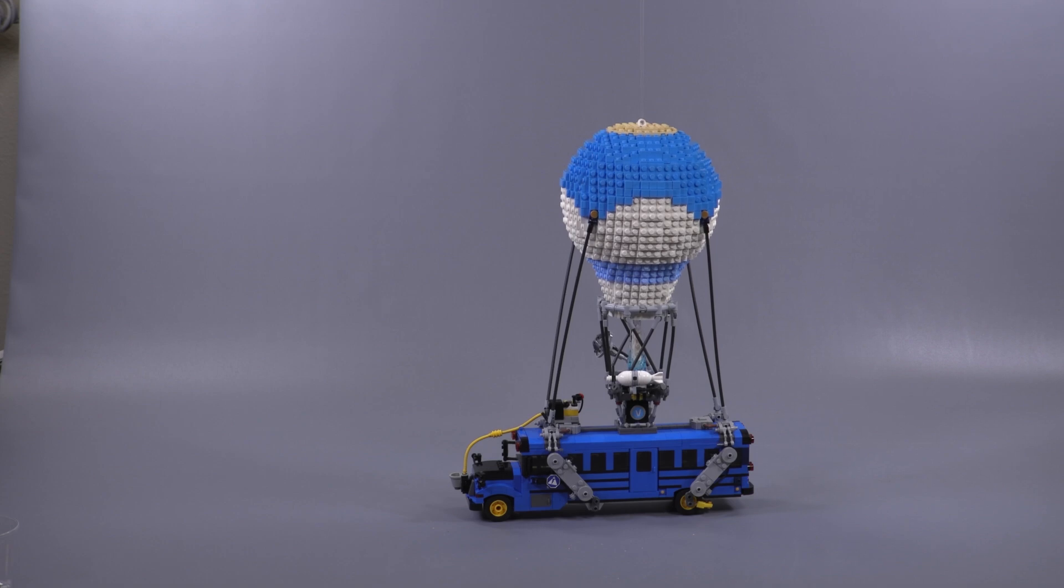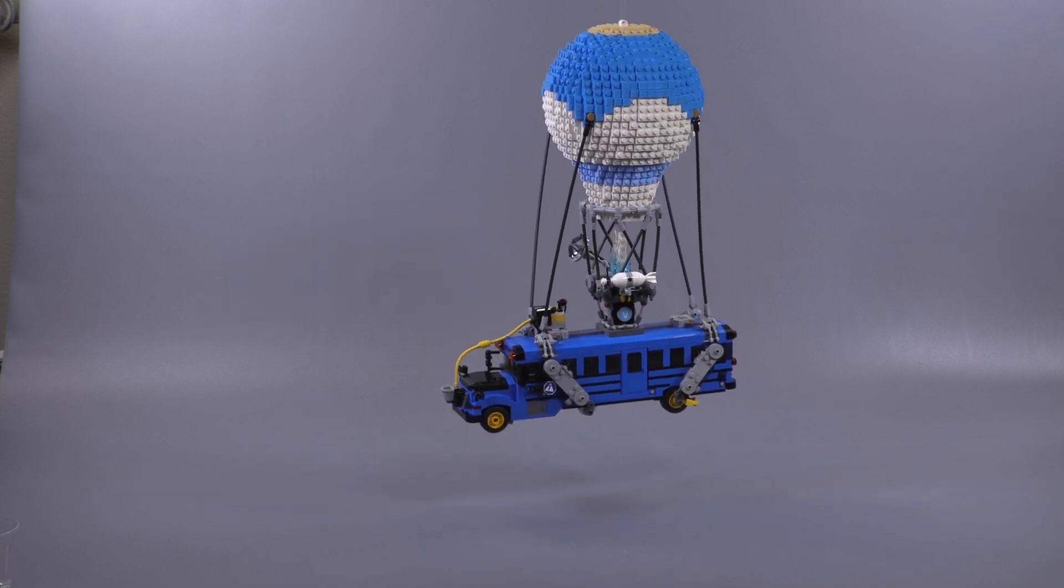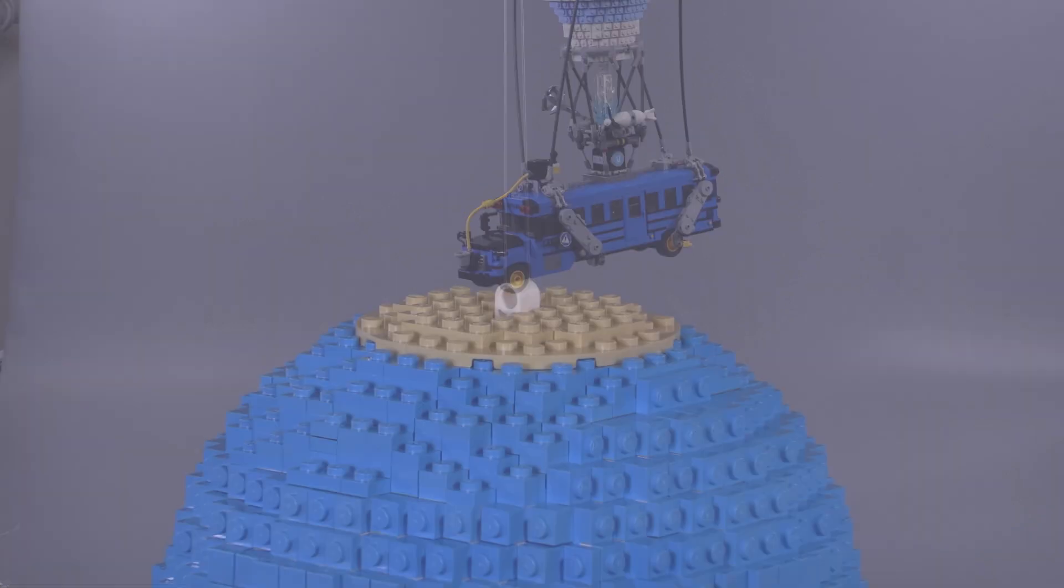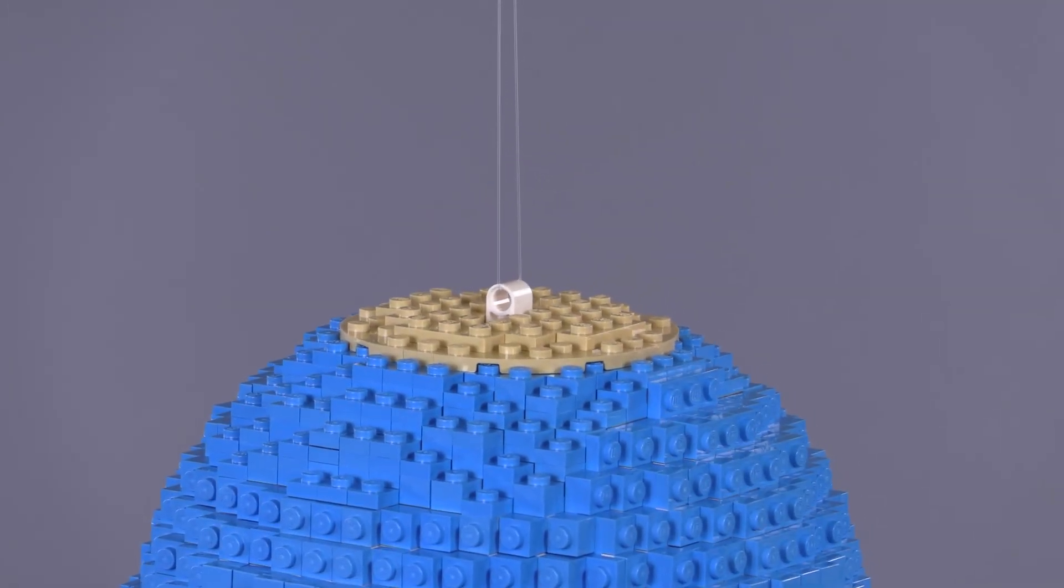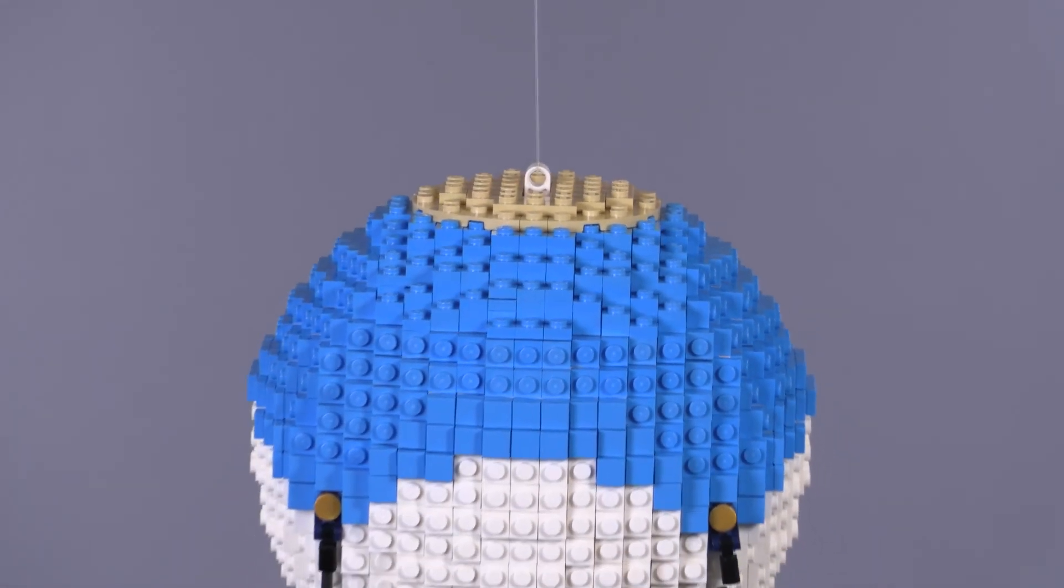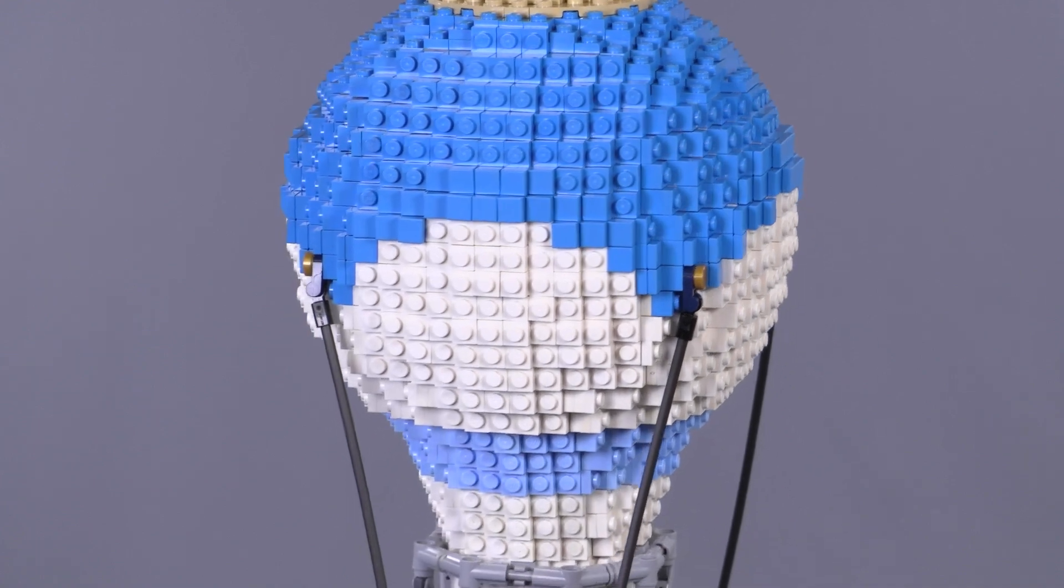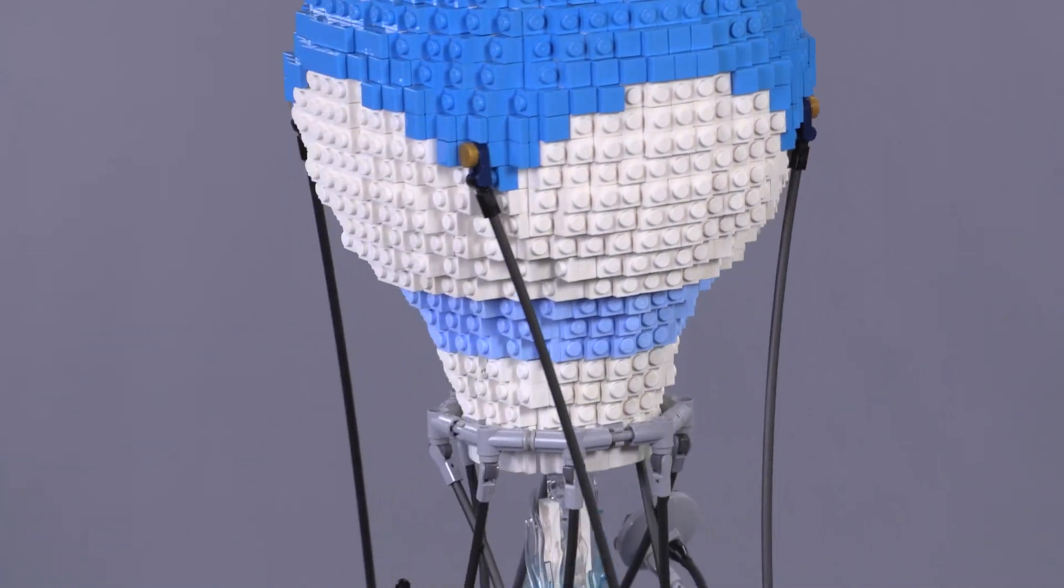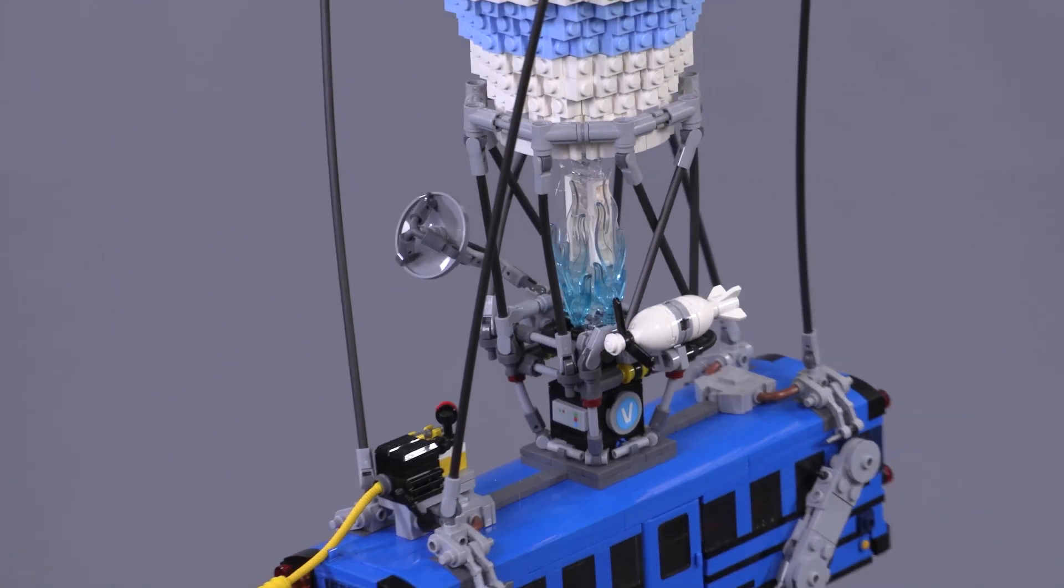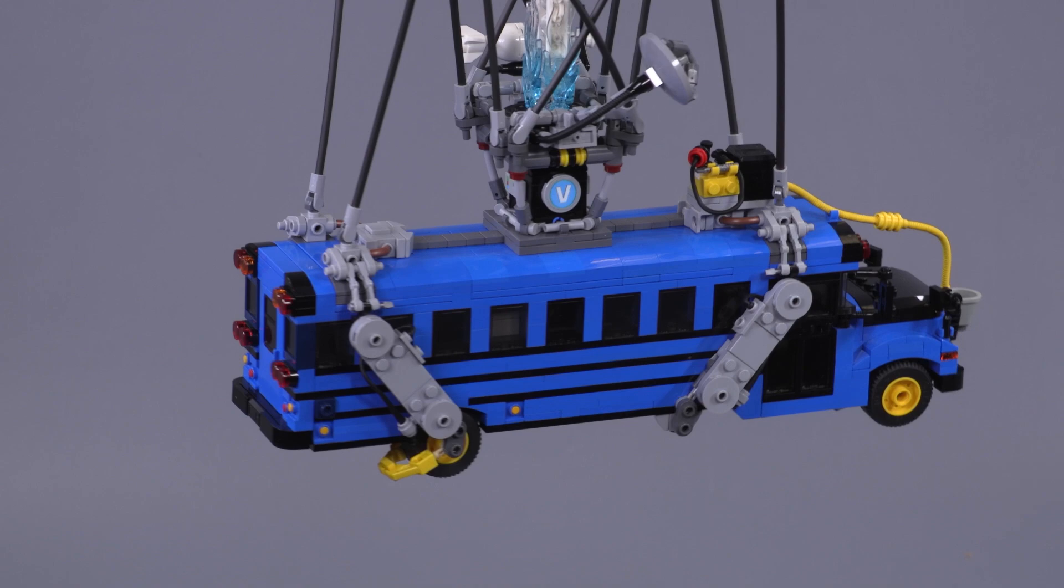This is the first model designed in our web store meant to be hung from above. For something like this to work properly, the design from the very beginning had to be built around the actual hanging function. Technic lift arms are connected to the very top piece that sticks out from the balloon. You can see the trans-clear technic lift arm cutting through those flame pieces in the center.